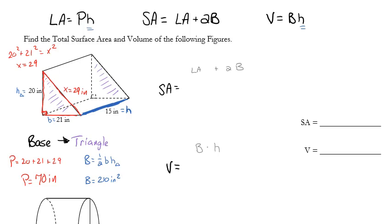We have all of our key pieces of information for my lateral area. I have the perimeter of my base. I know the height of my prism. So that's going to be 70 times 15. I have to add to that not one area of the base, but two areas of my base. And I have my area of my base to be 210, so it's 2 times 210.